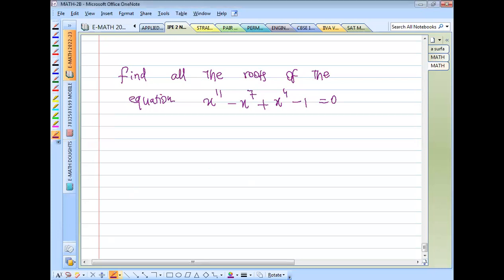So question copy is going to find all the roots of this equation: x power 11 minus x power 7 plus x power 4 minus 1 equal to 0. Very easy. First solution item, given equation: x power 11 minus x power 7 plus x power 4 minus 1 equal to 0.